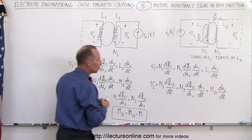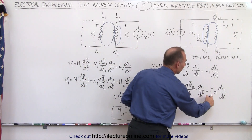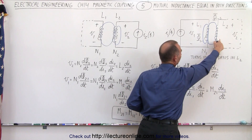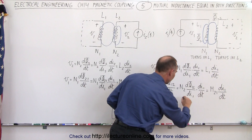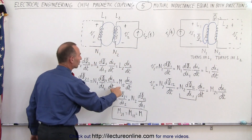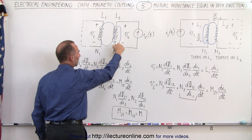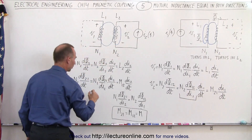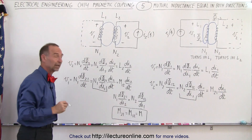When you realize that the mutual inductance on the second coil, or the second inductor, caused by what happens on the first circuit, is going to be equal to one quantity. And the mutual inductance on the first inductor caused by what happens on the second circuit would be equal to another quantity.